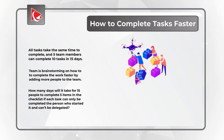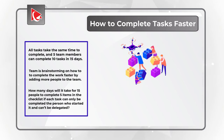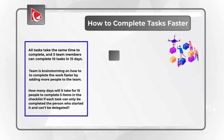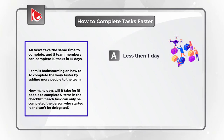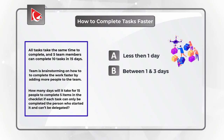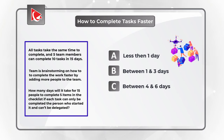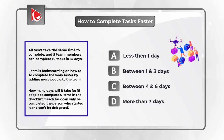You have 4 different choices. Choice A: less than 1 day. Choice B: between 1 and 3 days. Choice C: between 4 and 6 days. And Choice D: more than 7 days.